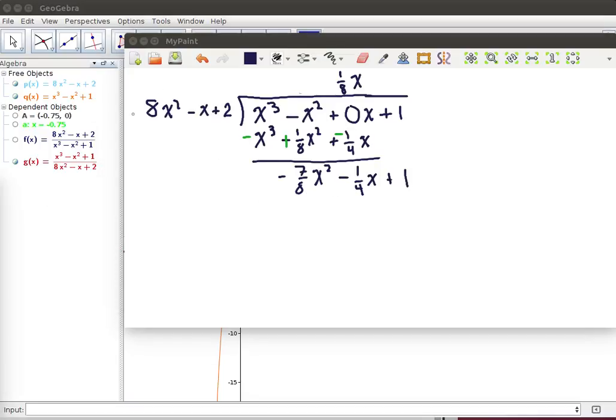Now we're looking for something that times x² will give us -7/8. The right amount is -7/64, so we'll need -7/64 times this polynomial. That will give us -7/8 x² + 7/64 x - 7/32.